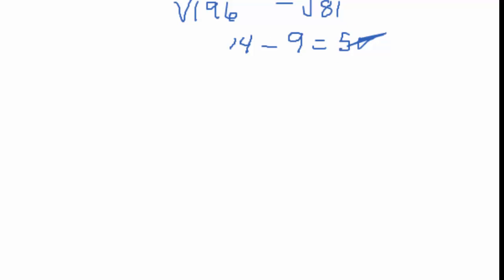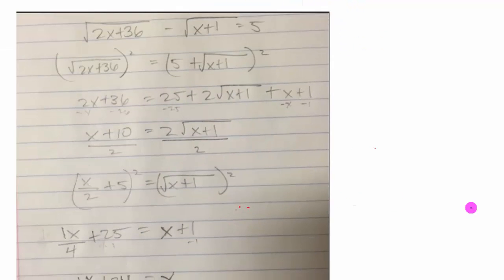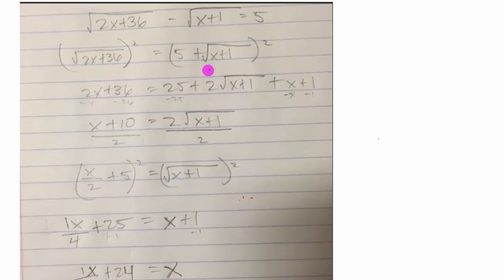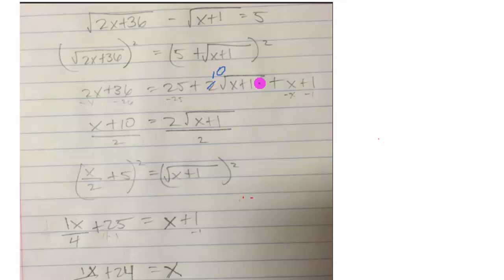Now let's look at a solution sent in by a student and talk about the errors. Good job getting the square root of x plus 1 to the other side — that's perfect. Good job squaring the square root to get 2x plus 36. However, the first error is in FOILing the 5 plus root of x plus 1: this middle term's coefficient should be a 10, not what was written. Good job moving terms over to get x plus 10, just like we did, but that 10 coefficient error carries through. Also, dividing by 10 is an option but introduces fractions — sometimes it's better to leave the 10 and square it, making sure to get 100.